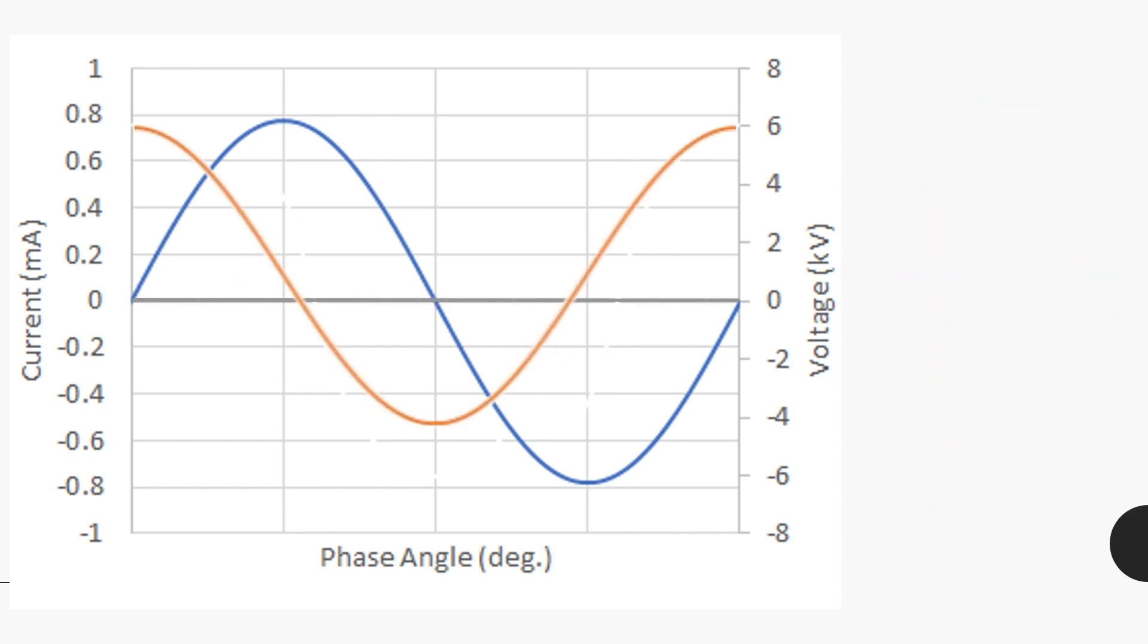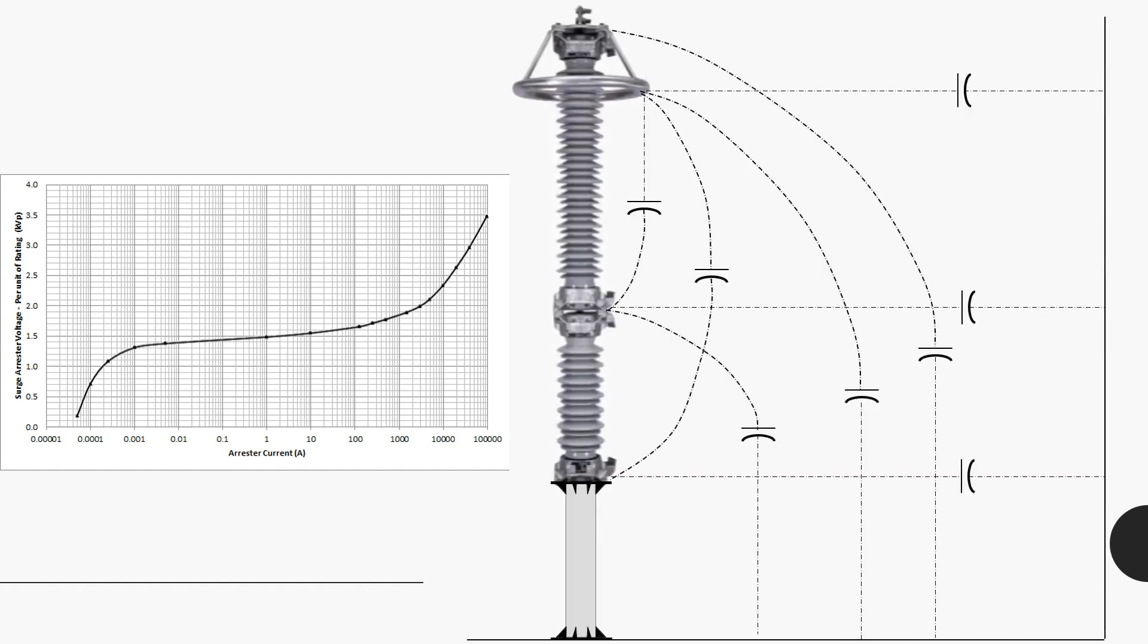The capacitive component of leakage current is not actively responsible for anything. The capacitive current is mainly because of the permittivity of non-linear metal oxide resistor as well as stray capacitance and grading capacitance of lightning arrester at site. There is no evidence that the capacitive component of leakage current would significantly change due to the change in VI characteristics of the non-linear metal oxide resistors.